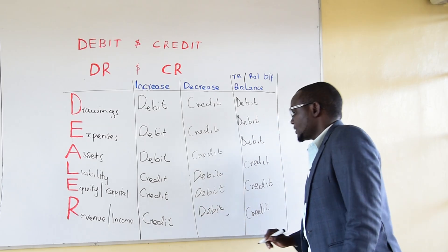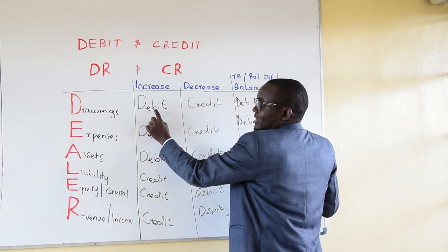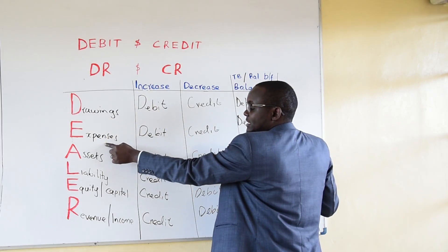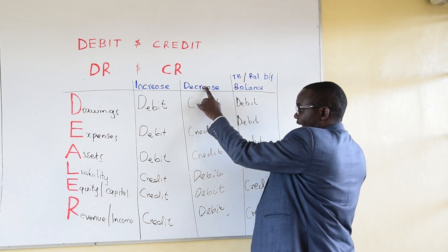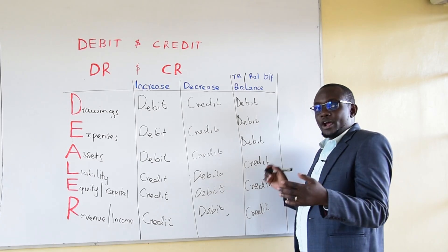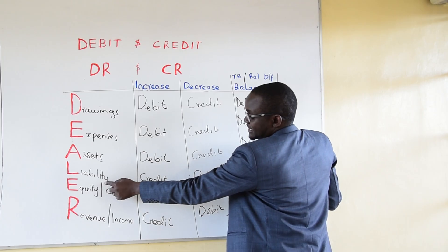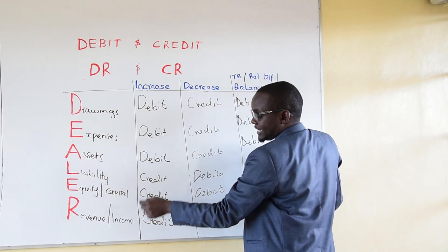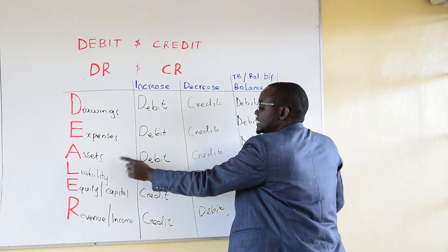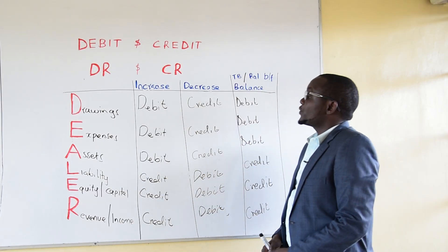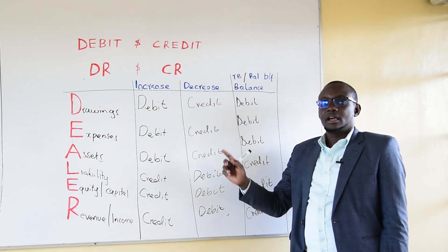In an exam scenario you can be asked to define what is a debit in six ways: a debit is an increase in drawings; a debit is an increase in expenses; a debit is an increase in assets; a debit is a decrease in liability; a debit is a decrease in capital; a debit is a decrease in income or revenue. The same way you can define what is a credit in six ways: a credit is an increase in liability; a credit is an increase in capital; a credit is an increase in revenue; a credit is a decrease in drawings; a credit is a decrease in expenses; and a credit is a decrease in assets. These are the ways in which you can define debit and credit, and this is the simplest way to understand what is a debit and what is a credit. Thank you.